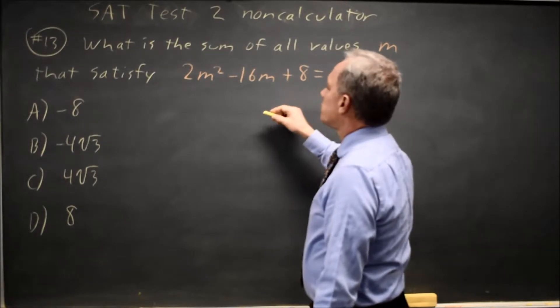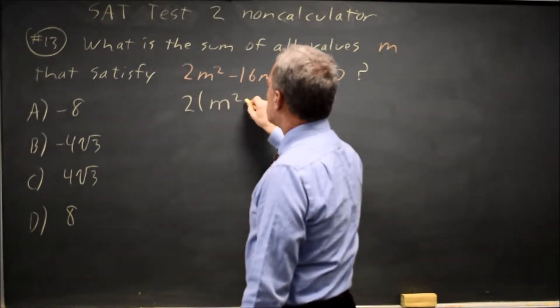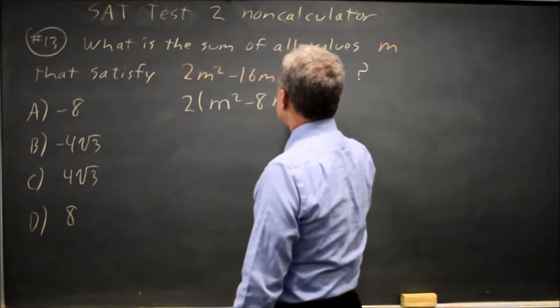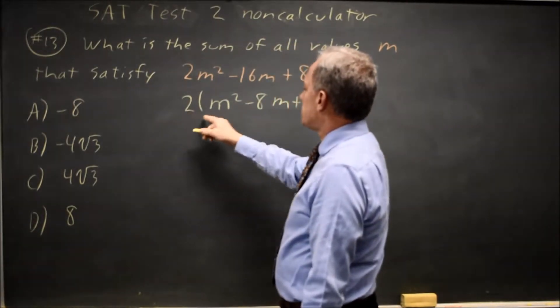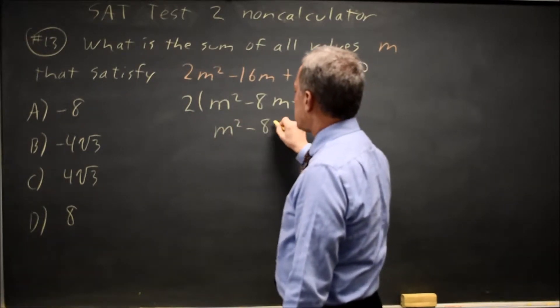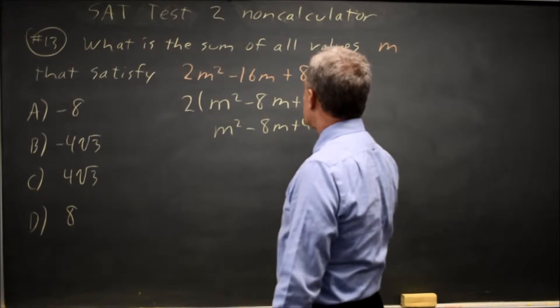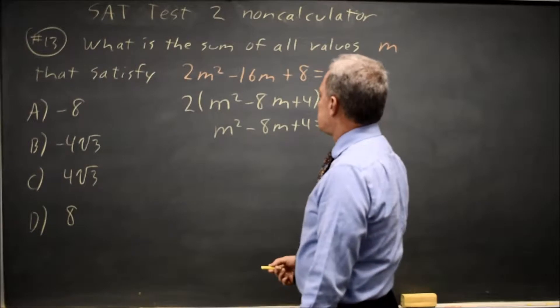I notice that all these coefficients are even, so I'm going to factor out a 2 and get twice m squared minus 8m plus 4 equals 0. Since 2 is not 0, this quadratic has to be 0 for a solution. m squared minus 8m plus 4 equals 0, and that leaves me in smaller numbers than the original, so the arithmetic will be easier.